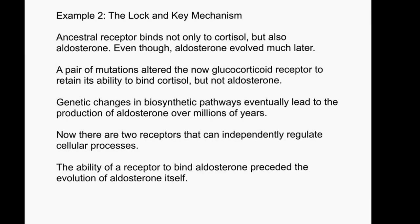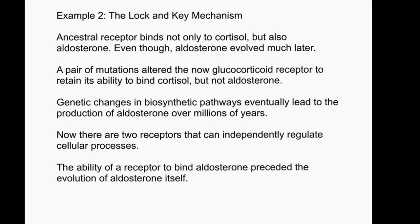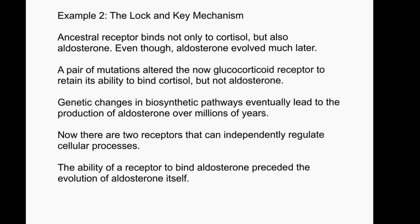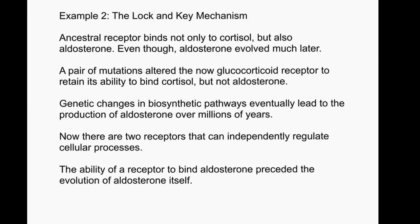Genetic changes in biosynthetic pathways eventually led to the production of aldosterone over millions of years. Because aldosterone could not trigger the mineralocorticoid receptor without interfering with the glucocorticoid receptor, there was a new signal-receptor pair that could be used independently to regulate other cellular processes. The ability of a receptor to bind aldosterone preceded the evolution of aldosterone itself.